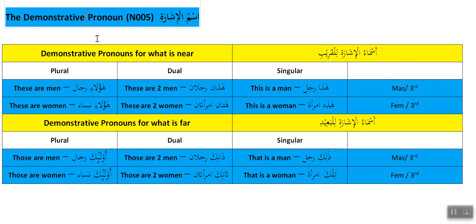So demonstrative pronouns make the thing you're indicating specific. We could call them 'indicative pronouns' — pronouns that you point with. And in Arabic we use the word 'ishara' which means to point.